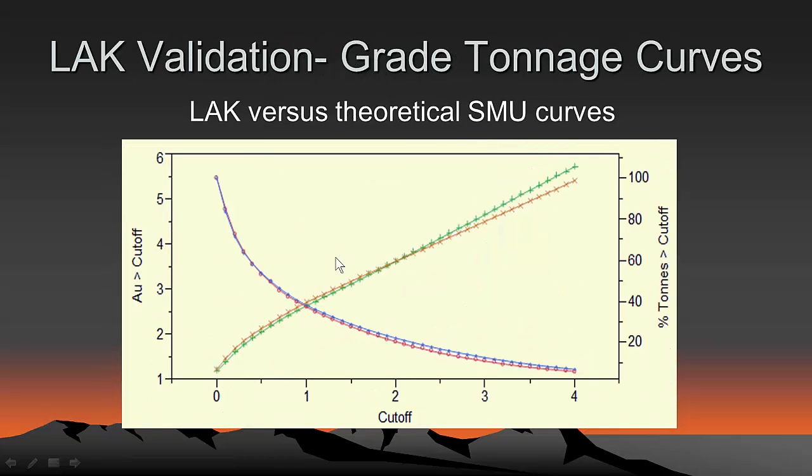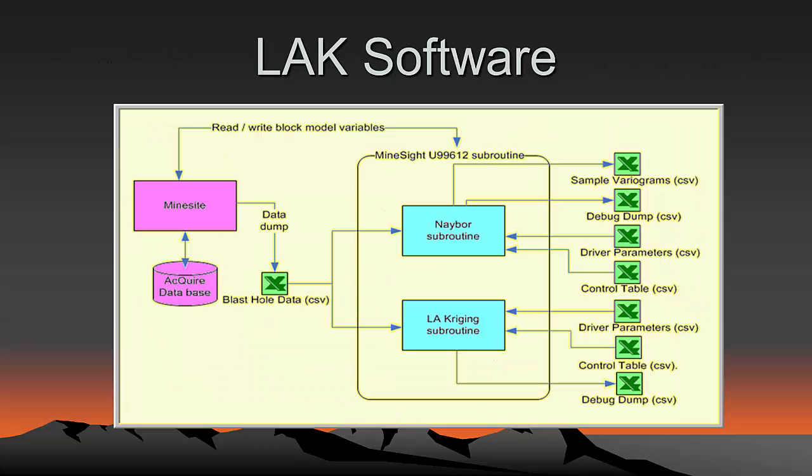Enough of that. We can also calculate grade tonnage curves and look at those grade tonnage curves for LAK and compare them to the grade tonnage curves of your estimator, whatever it happens to be, and see which one tends to predict things that are closer to the theoretical selective mining unit curve. And you remember how we can get those by change of support and using other models like the Herco model, for example.